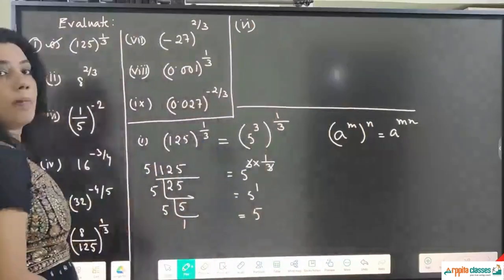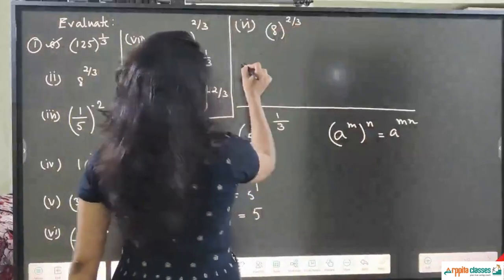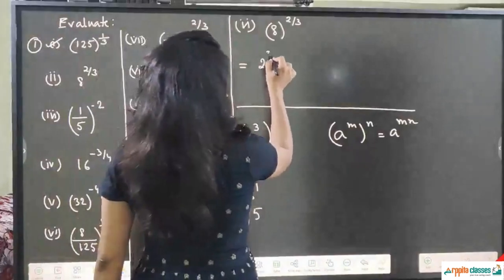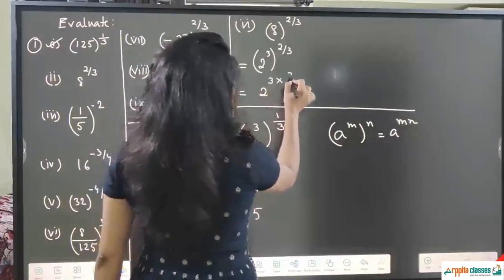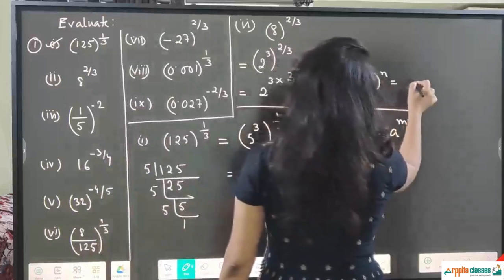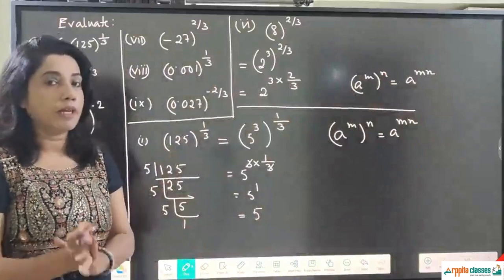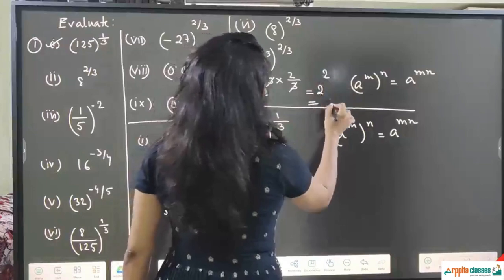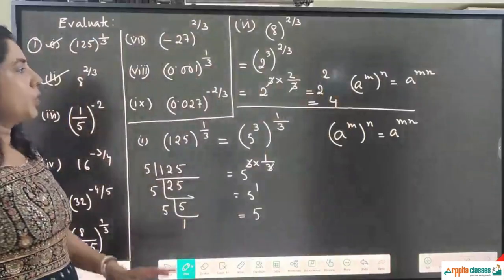The second sub-question is 8 to the power 2/3. Now 8 is 2³, so we write (2³) to the power 2/3. Using the property a to the power m whole to the power n equals a to the power m × n, it becomes 2 to the power 3 × (2/3). The 3s cancel, giving 2 to the power 2, which is 4. So the second answer is 4.